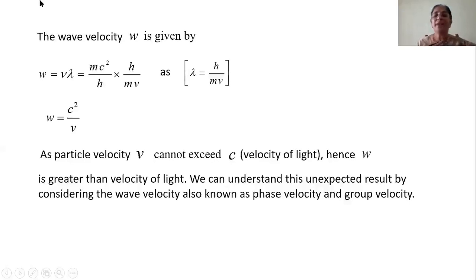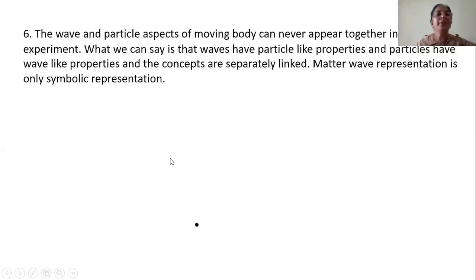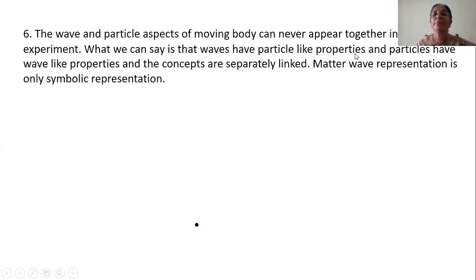We can understand this unexpected result by considering the wave velocity. The matter wave velocity has two names: phase velocity and group velocity. The next property is that the wave and particle aspects of a moving body can never appear together in the same experiment. You cannot see the particle nature and the wave nature simultaneously at the same time. What we can say is that waves have particle-like properties and particles have wave-like properties, and these concepts are separately linked.